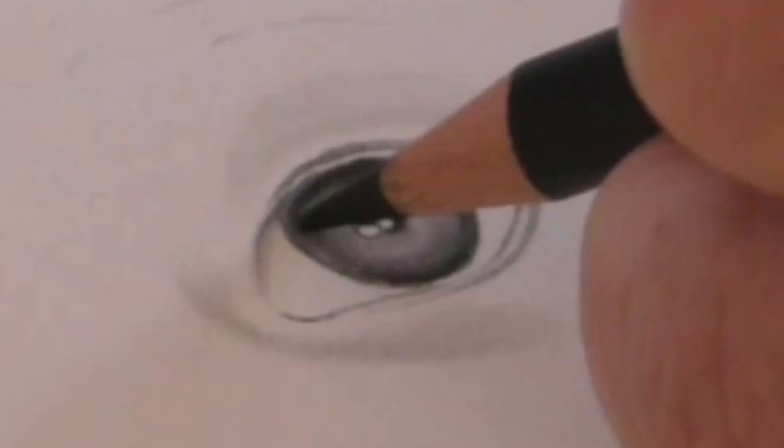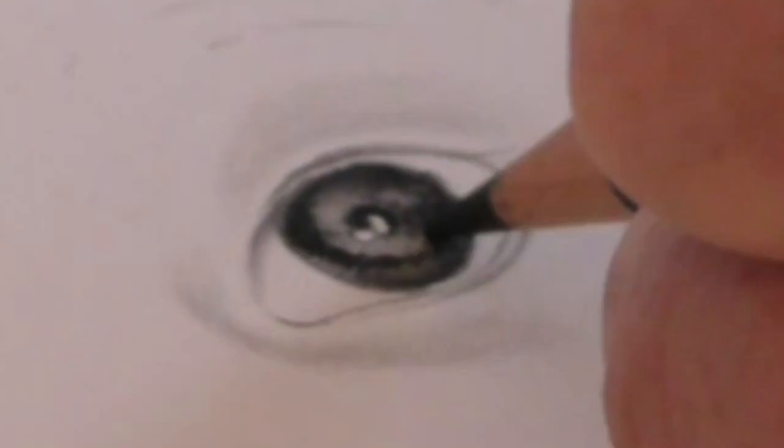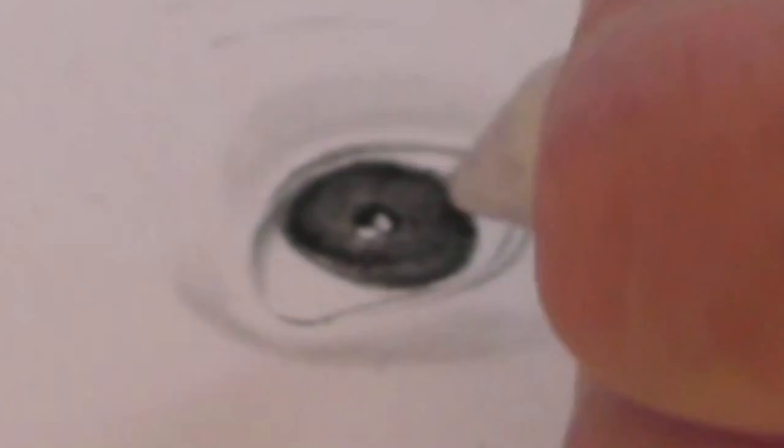Then I'm going to take my charcoal pencil again and start to work into that iris. I'm looking really carefully just for different tonal levels within the iris. Her eyes are so dark that if I'm not careful I'll get too dark and then we'll just end up with a flat eye, which we definitely do not want. Work it in with the paper stump.